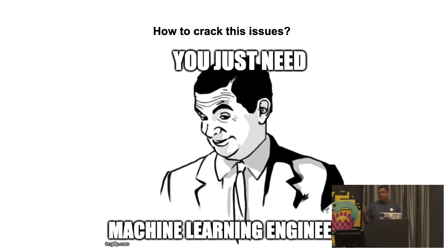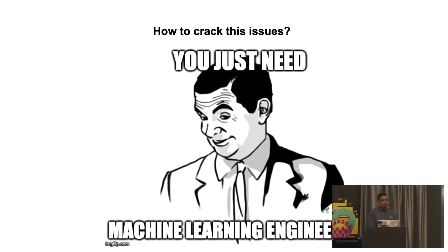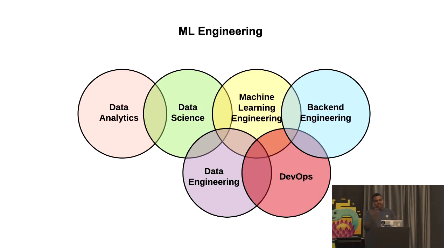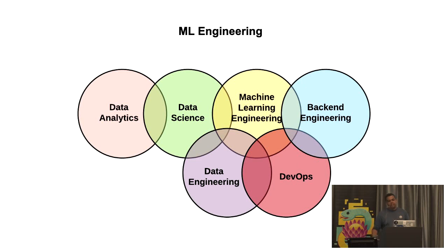Machine learning engineering might come to the rescue. It's the intersection between backend engineering, data science, DevOps, and data engineering. Different companies call this role different things — at my company we generally call it data engineering, but we're morphing into machine learning engineering to keep up with industry best practices. It's a role that understands backend, continuous integration, deployments, data engineering with Spark and Kafka, and has some knowledge of data science, receiving model inputs from data scientists to be deployed in production.